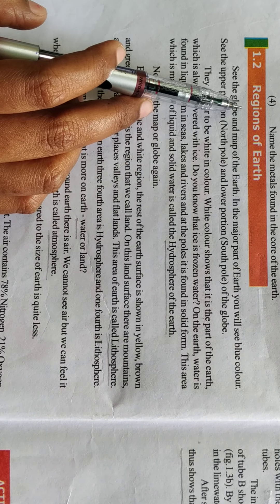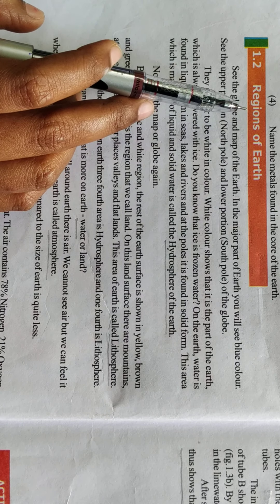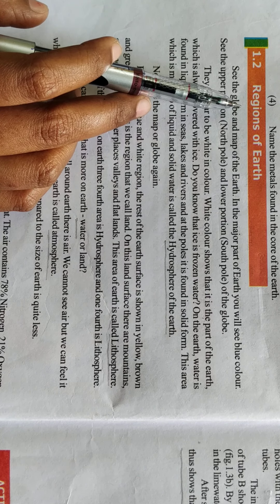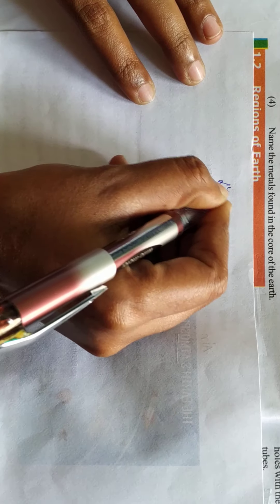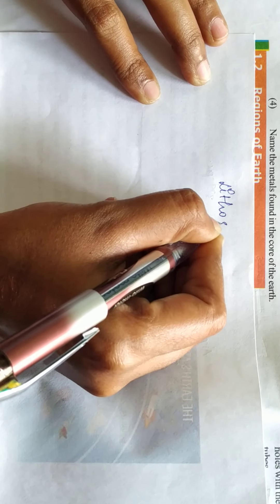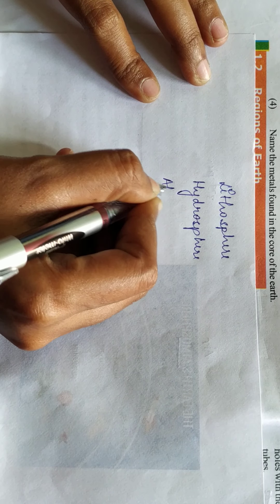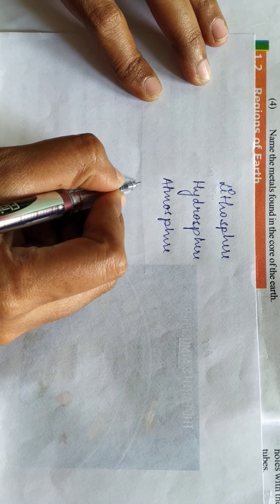Here, region means sphere — it means area. Bacho, region of earth ka meaning hai spheres of earth. We can divide the earth into four spheres. They are lithosphere, hydrosphere, atmosphere, and biosphere.